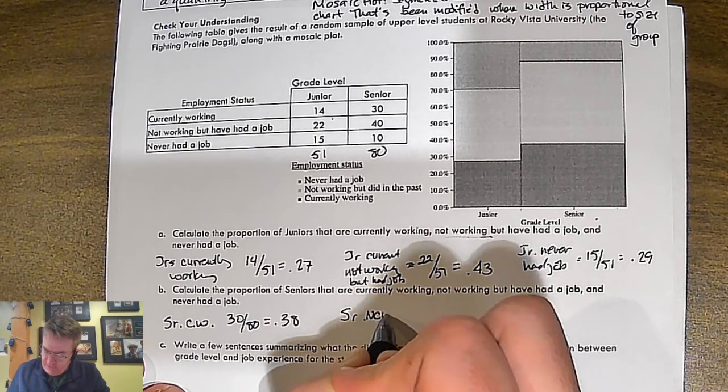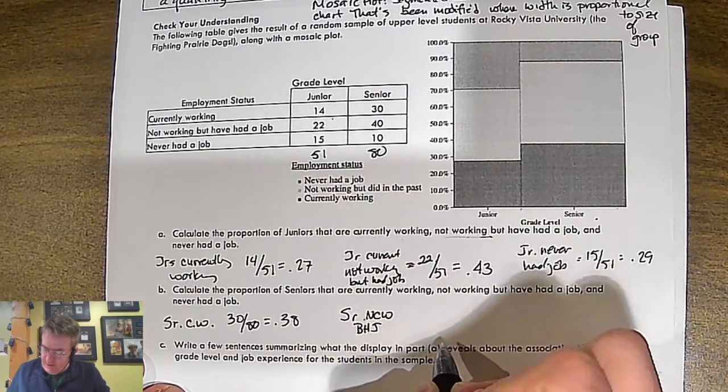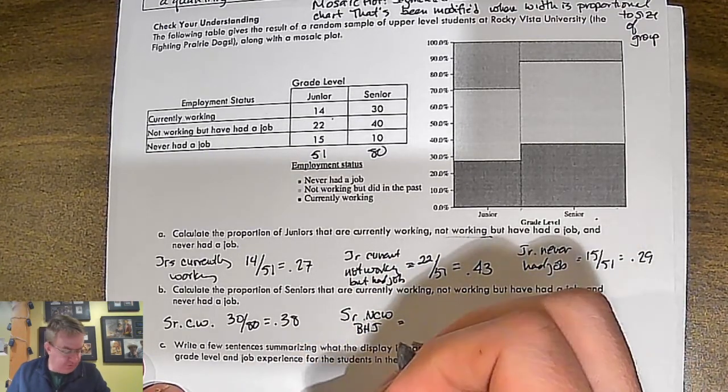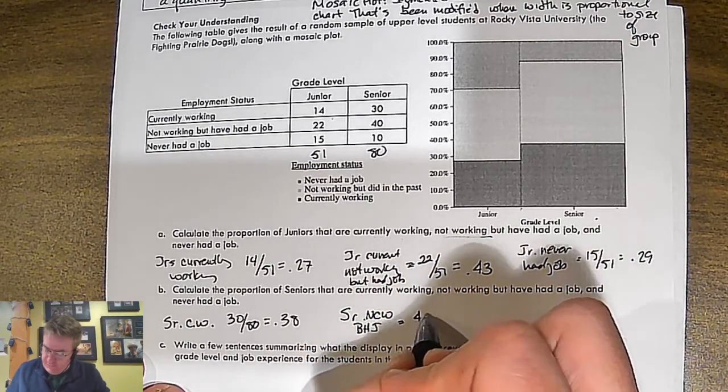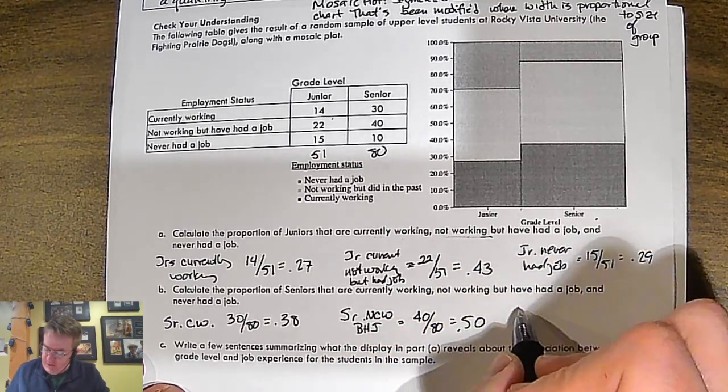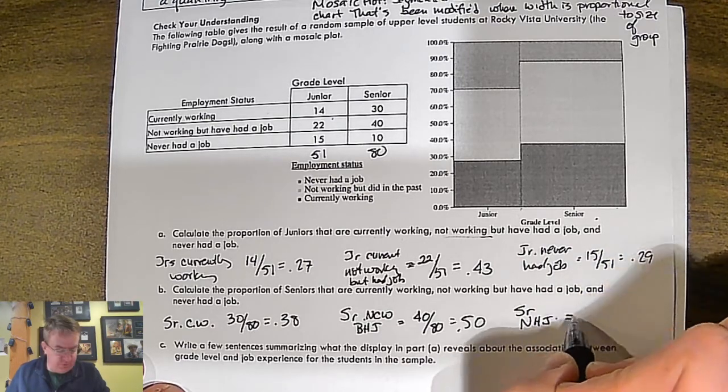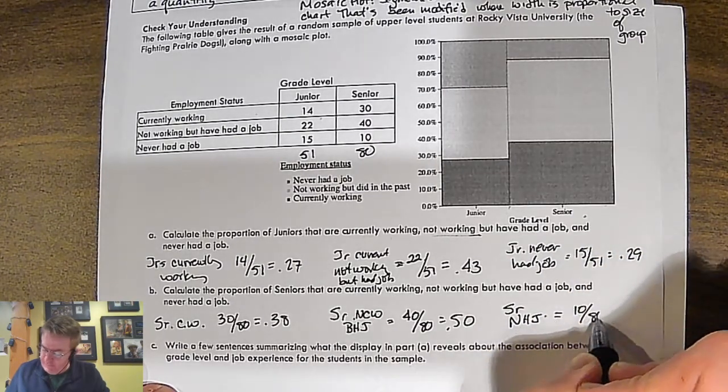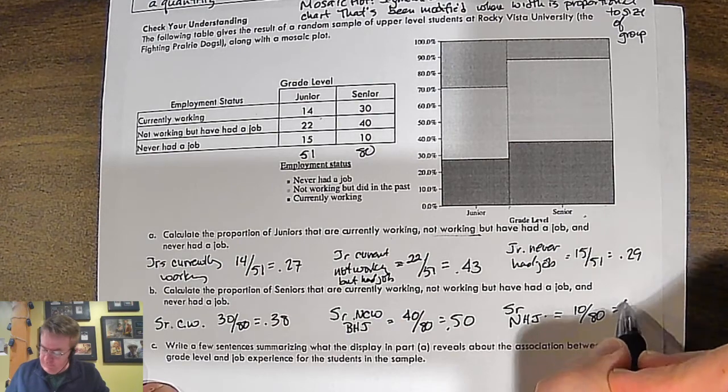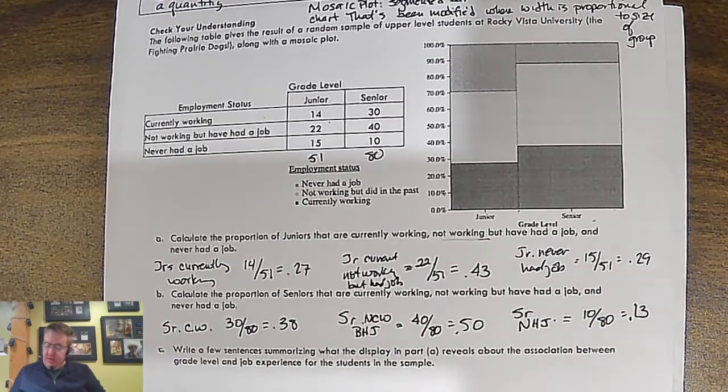So, that's 38%. Seniors not currently working, but had jobs, that is going to be 40 out of 80. That's 50% of that. And then, seniors who never had a job is going to be 10 out of 80. So, that's going to give us 12 and a half percent, we'll say 13.